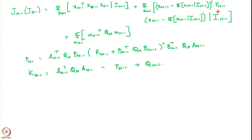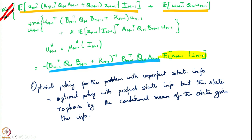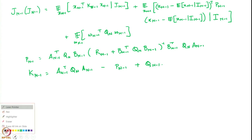Nonetheless, although the expression for the optimal value function or cost-to-go has changed, the policy is still the same. We are still using the same policy we would have used in the perfect state information case. Now let us apply this for the next time step and try to compute J_(n-2).